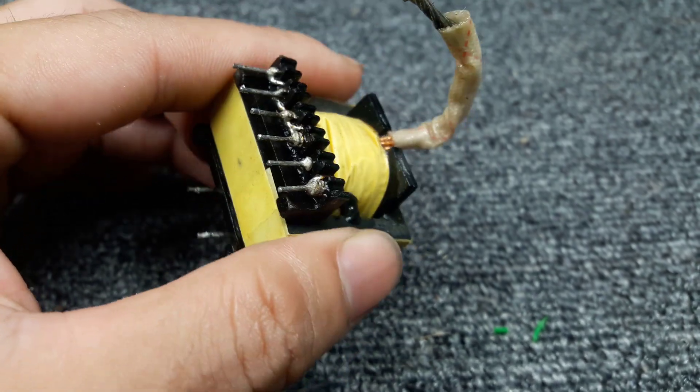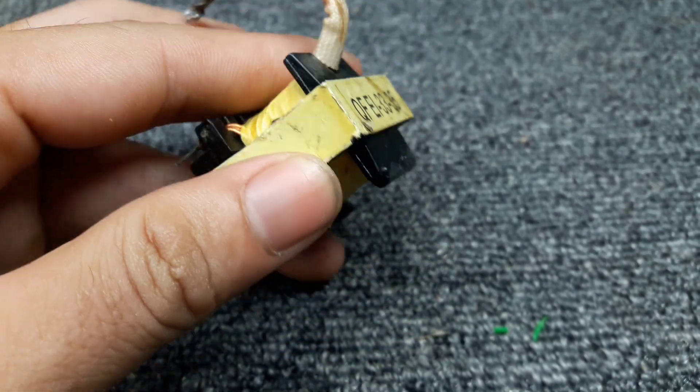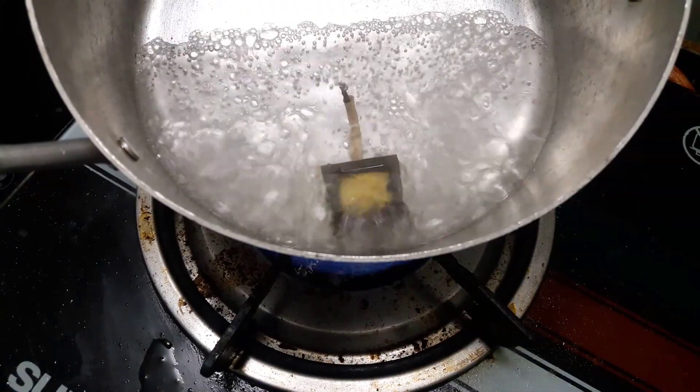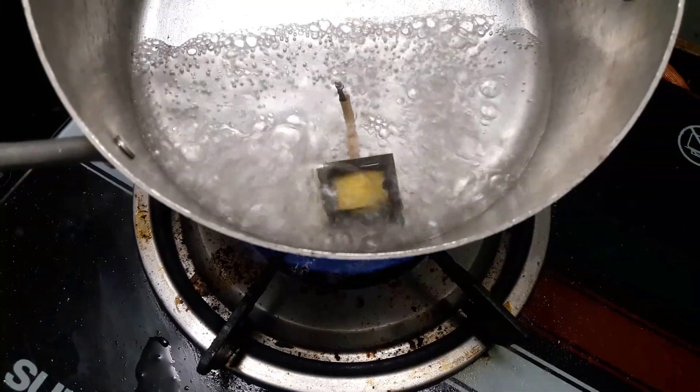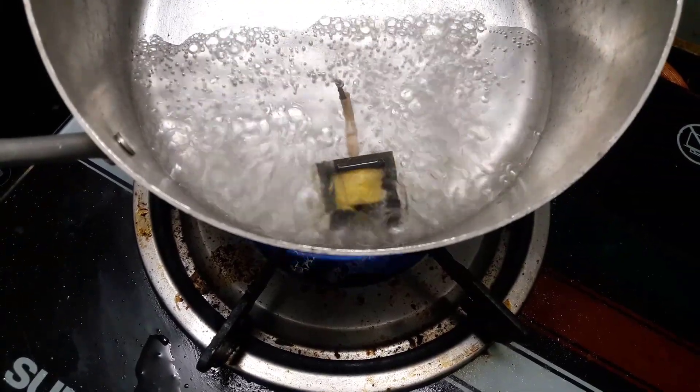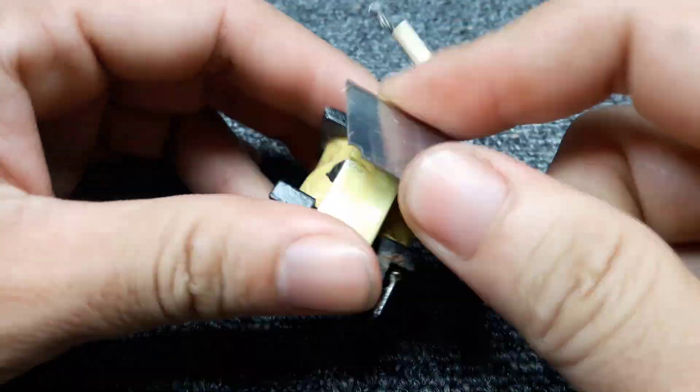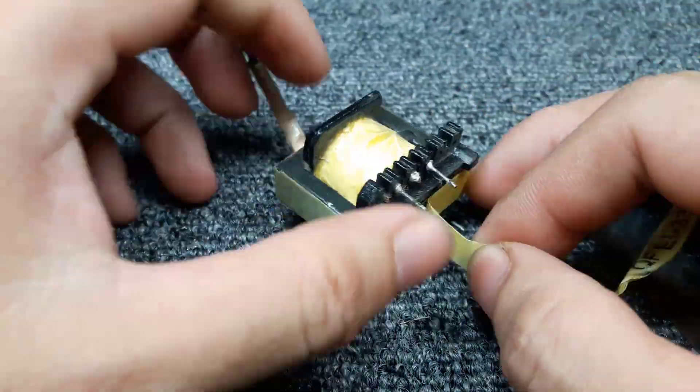This is the pulse transformer which I removed from my computer's power supply. We have to disassemble the parts by boiling with hot water. Then measure and calculate the parameters to rewind the wire.